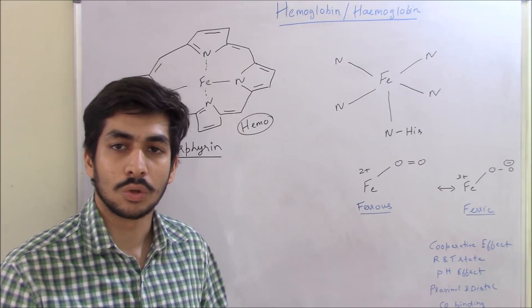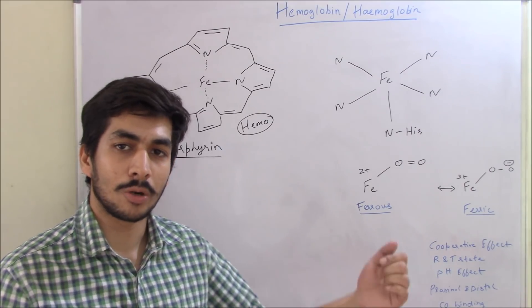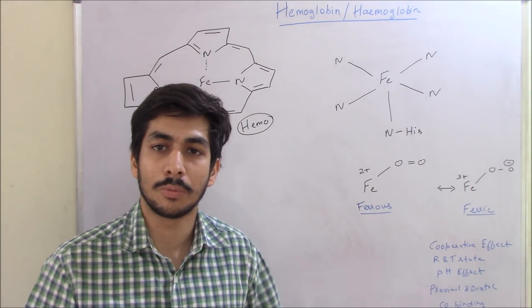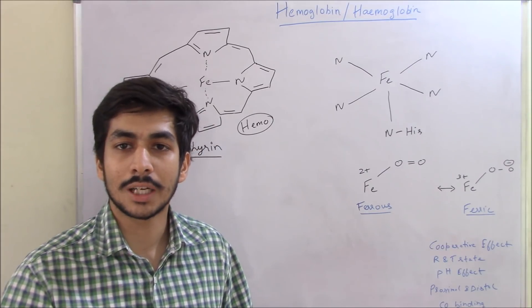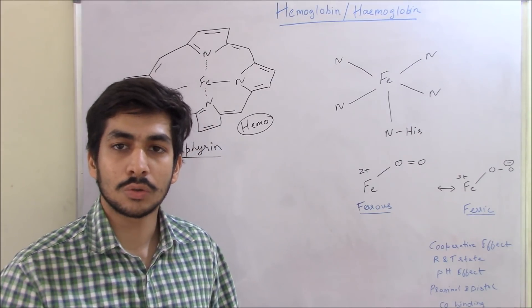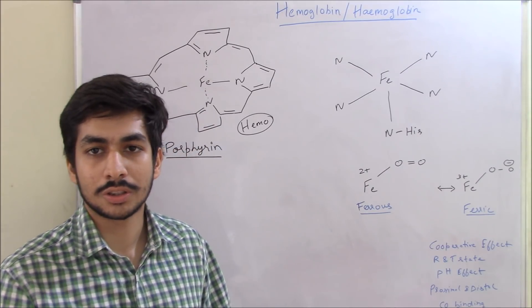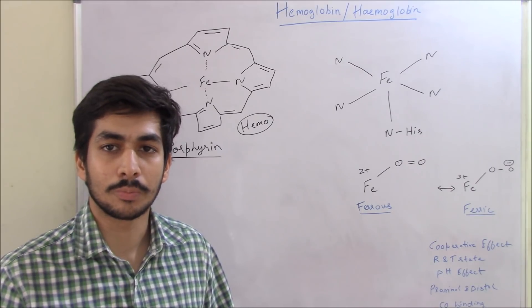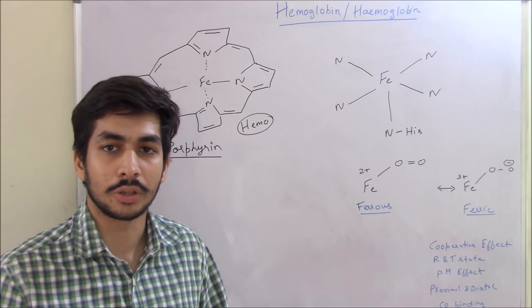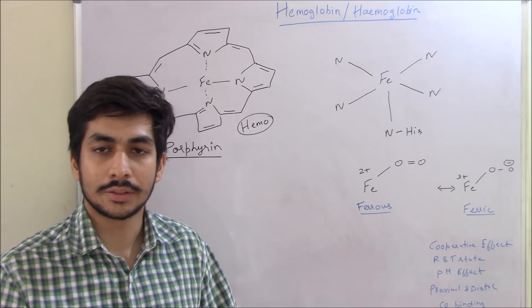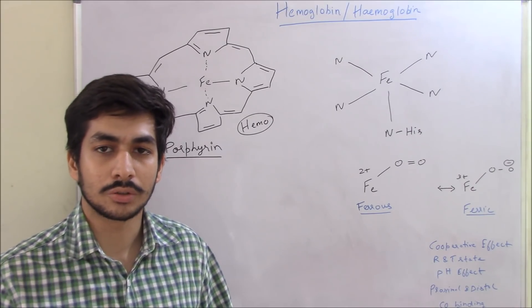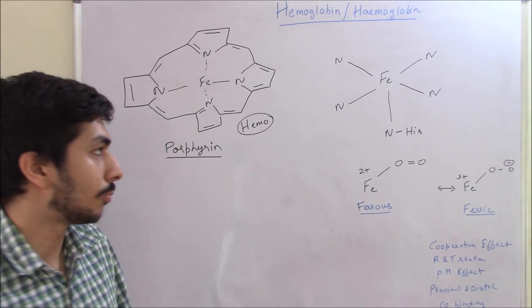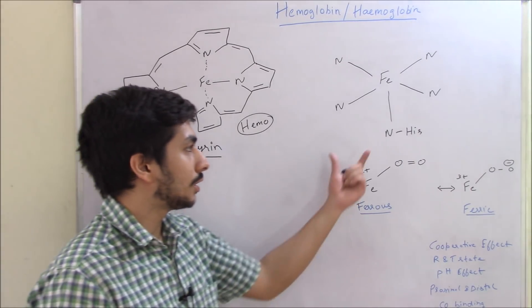However, having 'hemo' in the name doesn't always mean a heme group is present. For example, hemocyanin — the name also suggests a heme group — but hemocyanin does not have a heme group because it is a copper protein, not an iron protein. So don't go by the name alone.